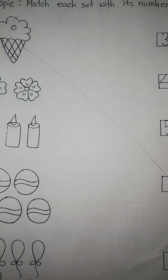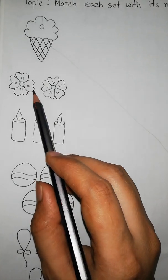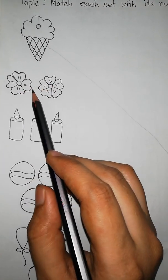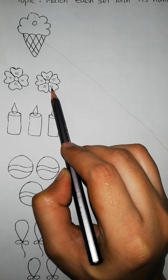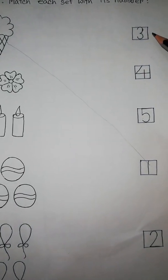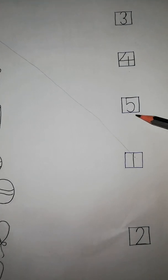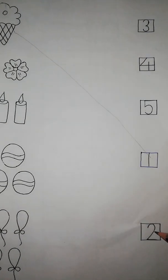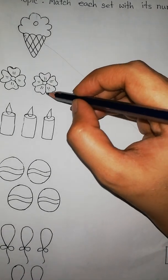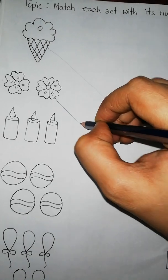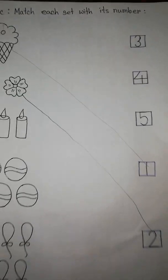What is this? This is flower. How many flowers are there? 1, 2. There are 2 flowers. So we match the number with 2. Is it 2? No. Is it 2? No. Is it 2? No. Is it 2? Yes. So we match with number 2.